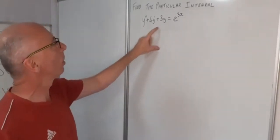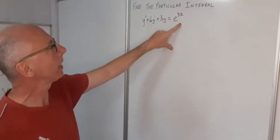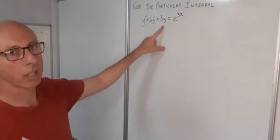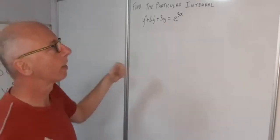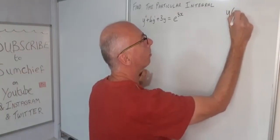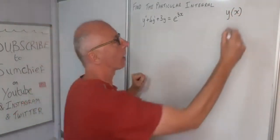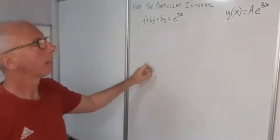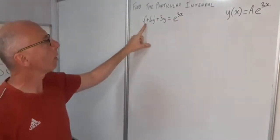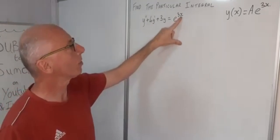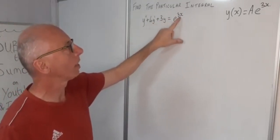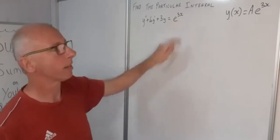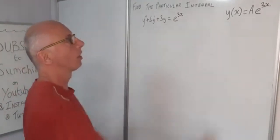We're looking for a solution in the form of e to the 3x. We could put a 1 in front of this, so we expect there may be a constant in front of this exponential. We're looking for something in the format y(x) = a·e^(3x). The reason we leave it in the form of 3x is because when we take the derivative of the exponential function, the 3x will stay no matter how many times we differentiate.